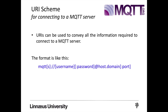This schema or scheme part defines the protocol to use to communicate with the server. It can be MQTT, or it can also be MQTTs, which is more secured for server communication. It can optionally include a username and password. The URI also includes the host and domain as a mandatory part. The default port number is 1883 for MQTT, and if you are using MQTTs, then it is 8883.